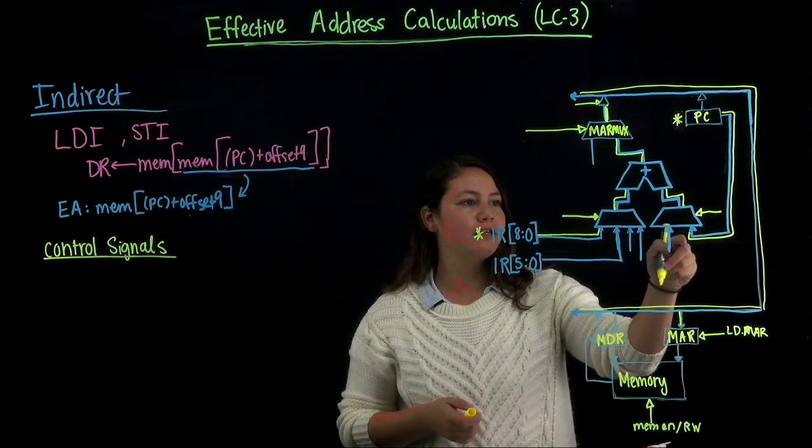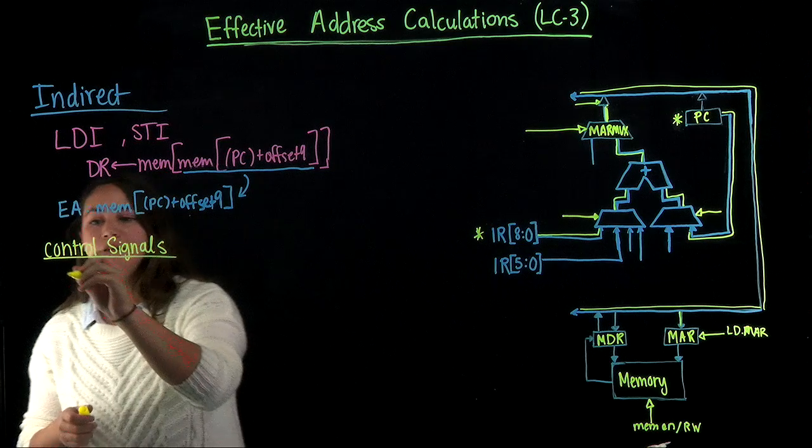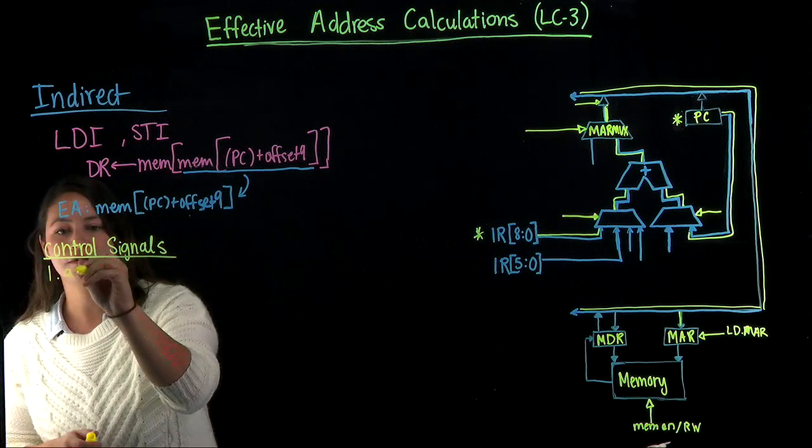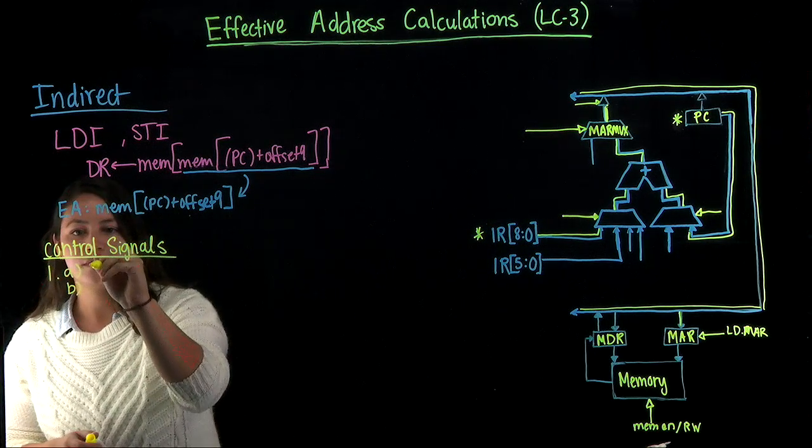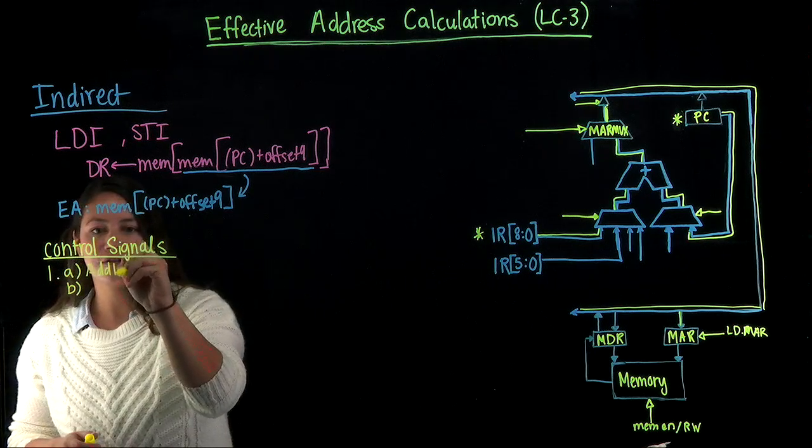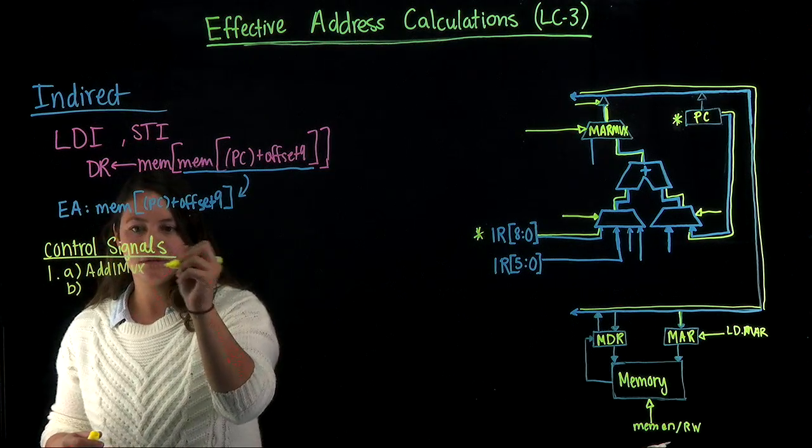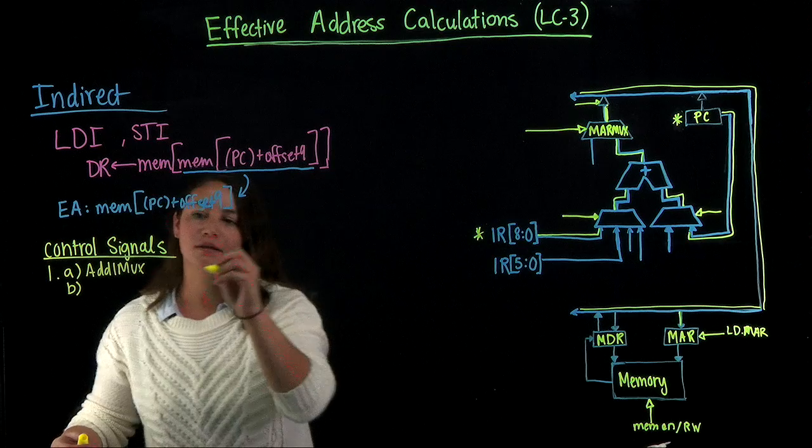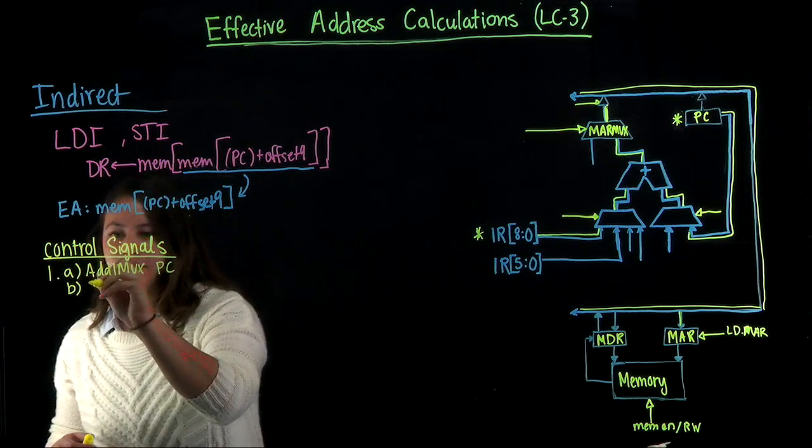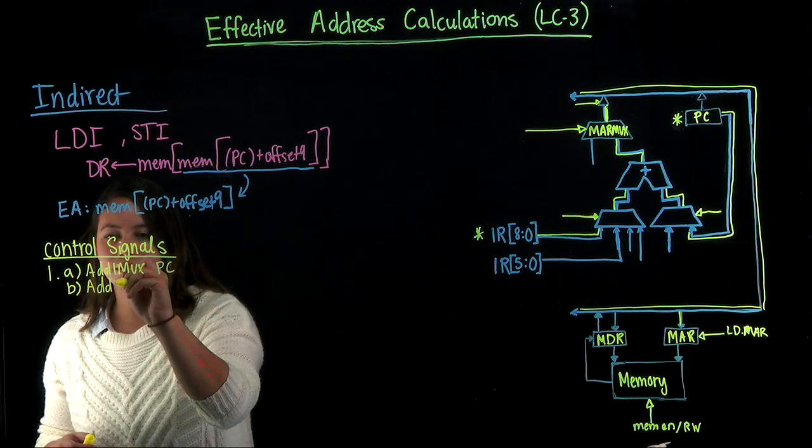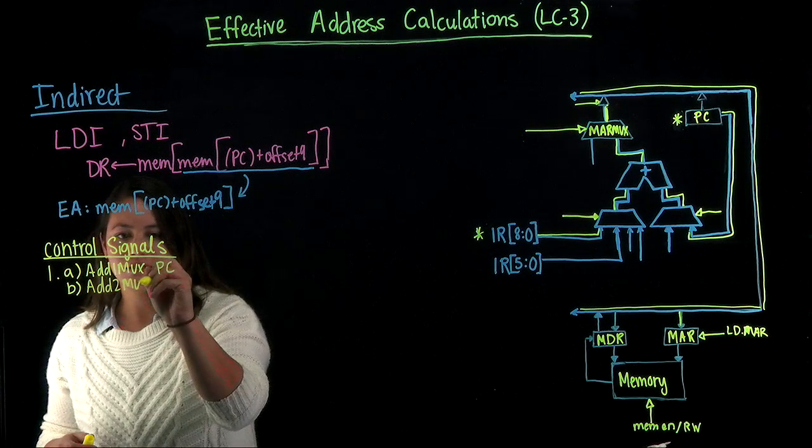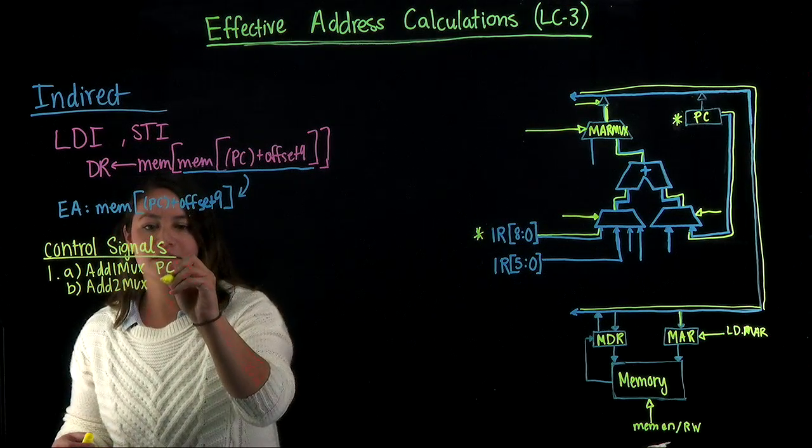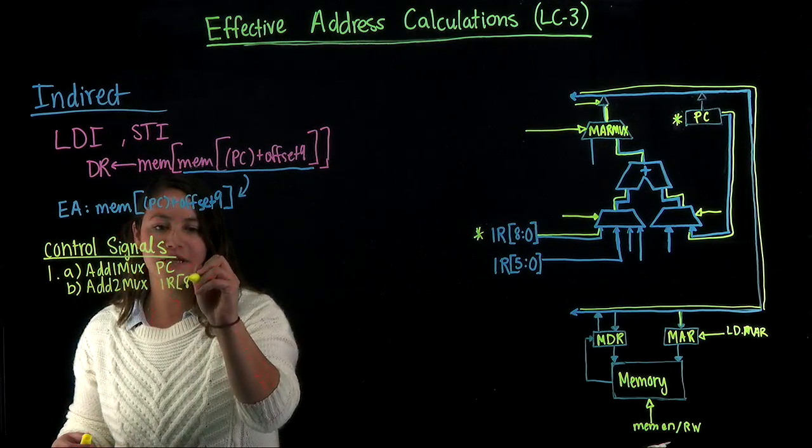We get these right here, and then we want to send the same signals. The address 1 mux selects the PC, and then the address 2 mux selects the instruction register bits 8 down to 0.